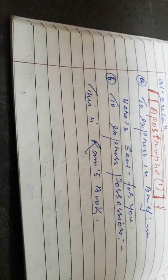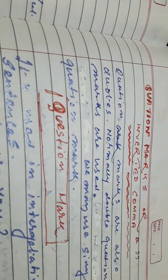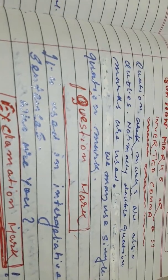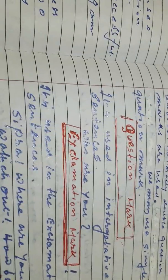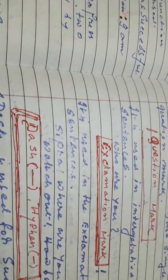An apostrophe is used to express grief or possession. For example: 'This is Ram's book' — here the apostrophe shows possession. Inverted commas, also called double quotation marks, are used to express direct speech. Single quotation marks may also be used. A question mark is used in interrogative sentences — for example: 'Where are you going?'